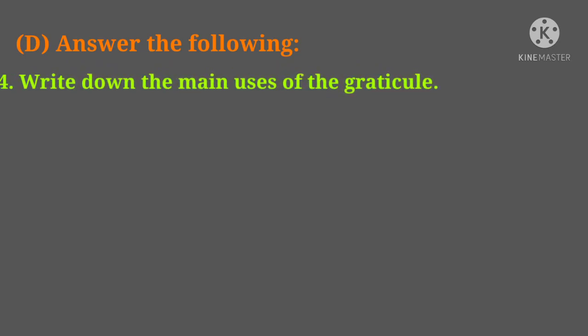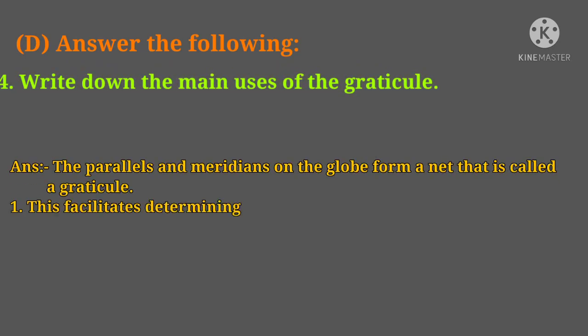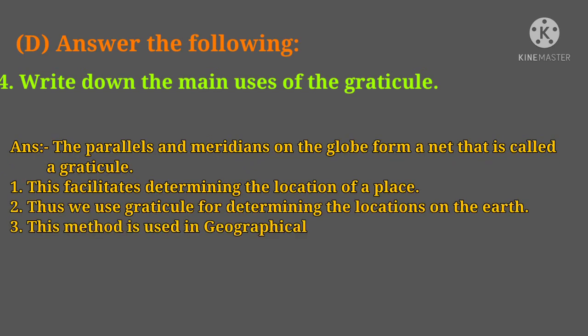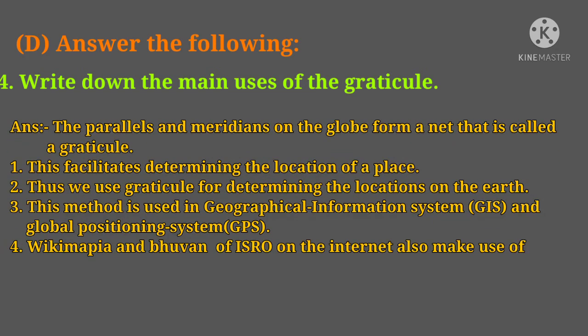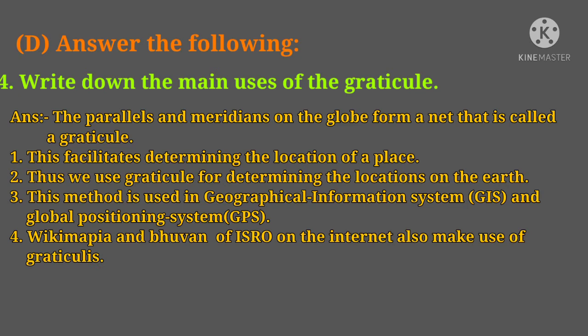Question number four: write down the main uses of the graticule. The parallels and meridians on the globe form a net that is called a graticule. This facilitates determining the location of a place. We use the graticule for determining locations on the earth. This method is used in GIS (Geographical Information System) and GPS (Global Positioning System).